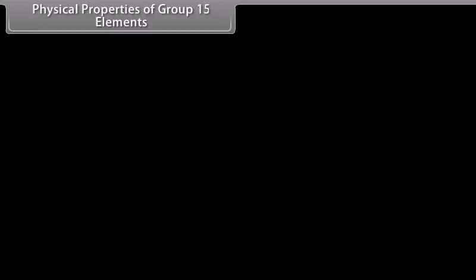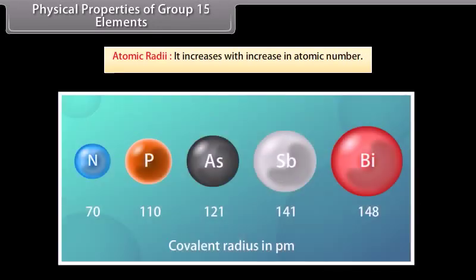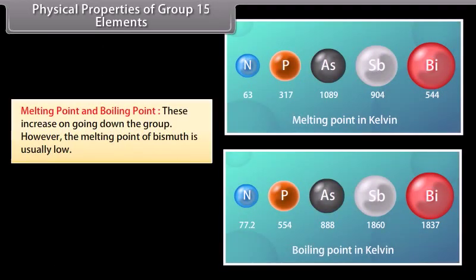Physical properties of group 15 elements: Atomic radii increase with increasing atomic number. Melting point and boiling point increase on going down the group. However, the melting point of bismuth is unusually low, which may be due to its greater tendency to form 3 rather than 5 covalent bonds, resulting in weak forces of attraction between atoms in the solid state.